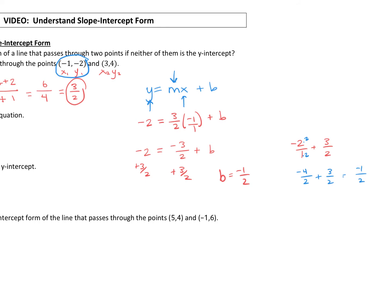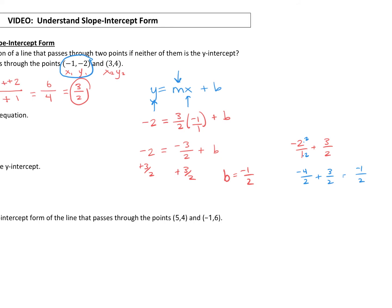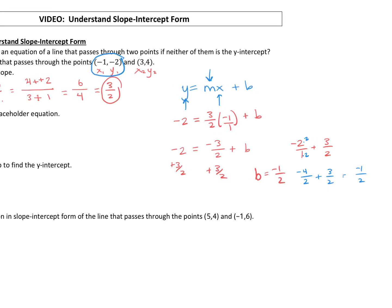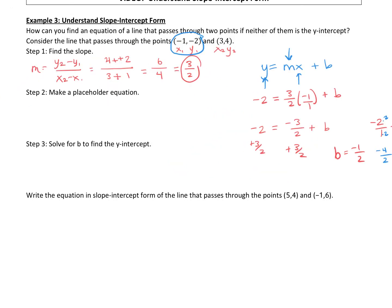Now that we have the slope and the y-intercept, we can just plug those right into our equation. So y equals, our slope was positive 3 halves. Oops, not 3x, positive 3 halves, x. And then our y-intercept is a negative 0.5, so minus, or a negative 1 half, so minus 1 half.